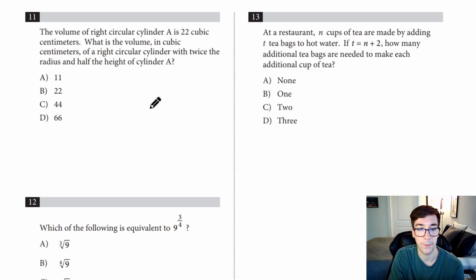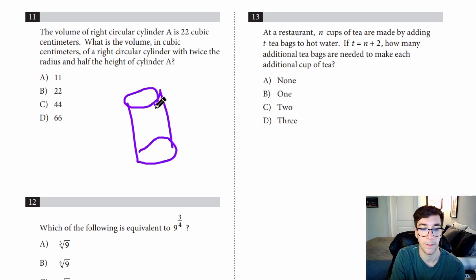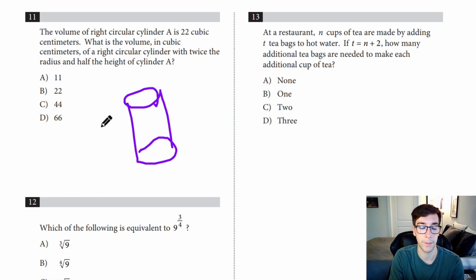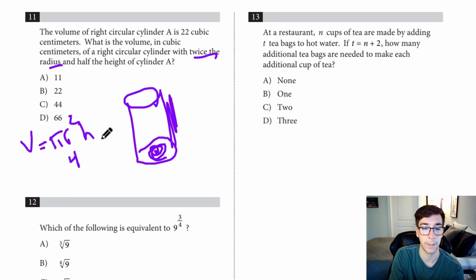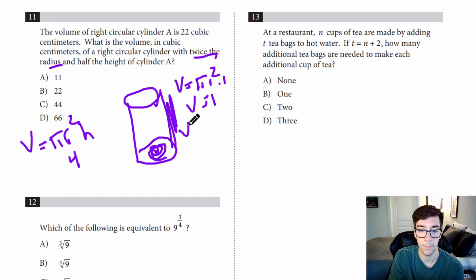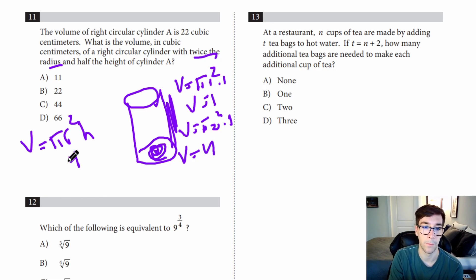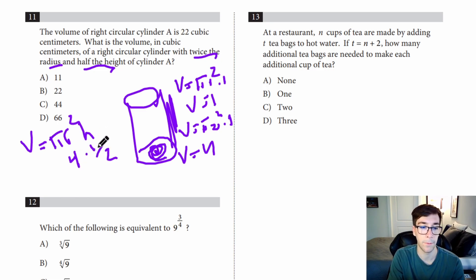Number eleven: the volume of a right circular cylinder A is 22 cubic centimeters. What is the volume of a cylinder with twice the radius and half the height? The formula is V equals pi R squared H. Doubling the radius multiplies the volume by 4 (since R is squared). Half the height multiplies by one-half. So the overall factor is 4 times one-half equals 2. Therefore 22 times 2 is 44. Answer is C.